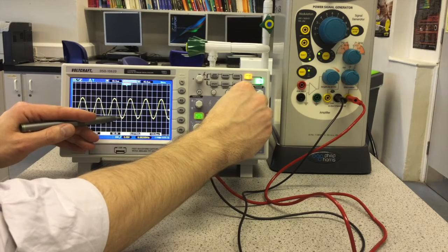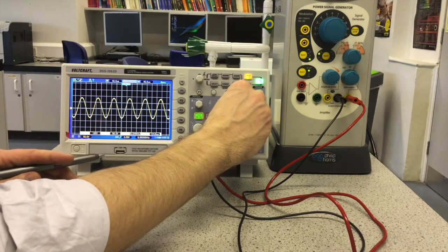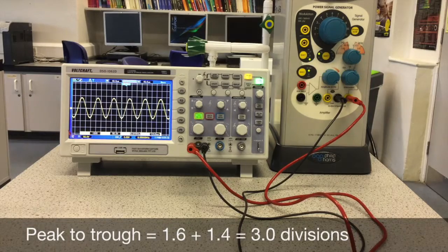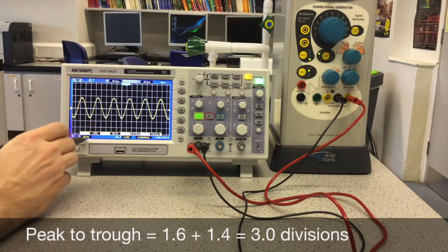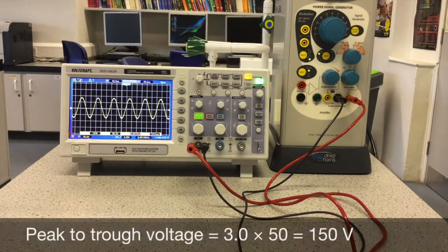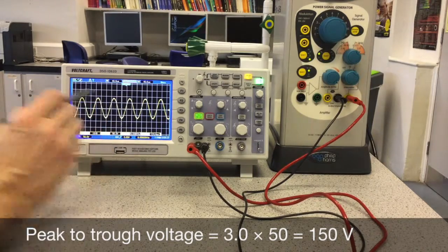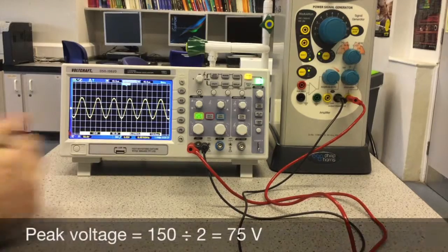And that's 1.4 below. So 1.4 plus 1.6 gives me 3, multiply that by the Y gain setting, 50, that's 150 volts peak to peak, divide that by 2, get 75.